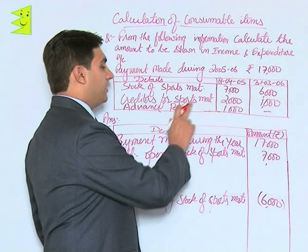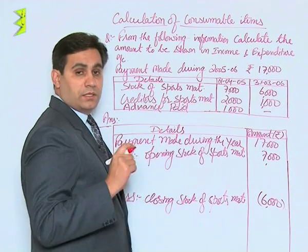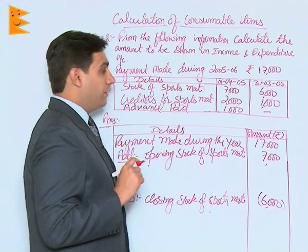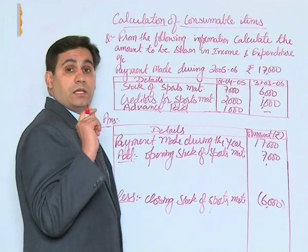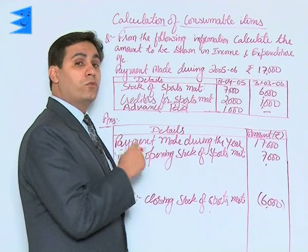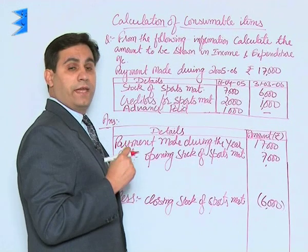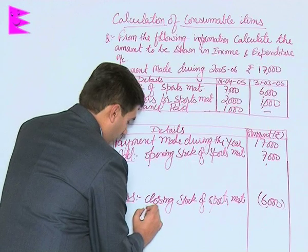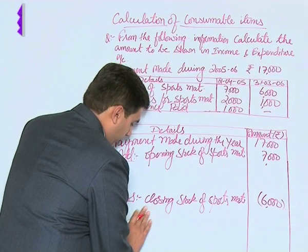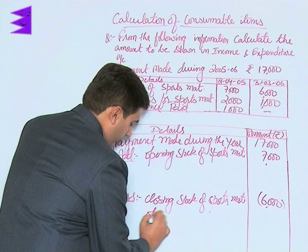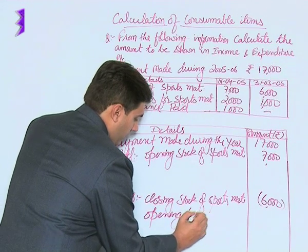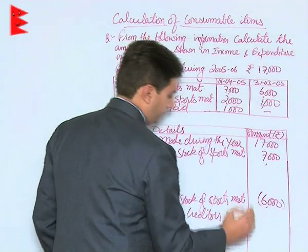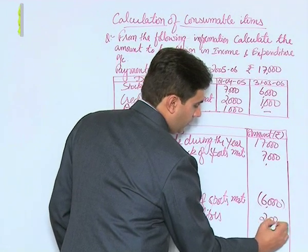Then we have creditors for sports material, that is creditors at the beginning of the year. Creditors at the beginning of the period belong to the previous year — the amount was due for the previous year. Hence it should not be taken as an expense of this year, so we show it as a deduction: opening creditors, 2,000.